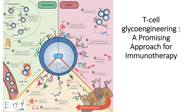In this video we will discuss how T cells can be glyco-engineered and used as a possible immunotherapeutic approach. T cells are usually formed from hematopoietic stem cells from the bone marrow, and cells destined to become T cells will migrate to the thymus, where T cell maturation occurs.